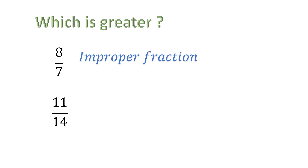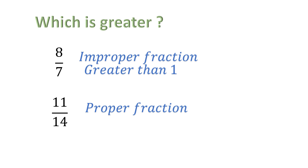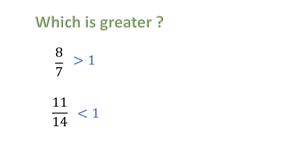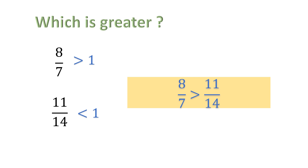Notice that 8/7 is an improper fraction because the numerator is greater than the denominator. As shown previously, improper fractions are always greater than 1 — we needed more than one block to represent it. Meanwhile, 11/14 is a proper fraction, which is always less than 1. So by simply identifying one fraction as improper and the other as proper, you can immediately conclude that the improper fraction is greater — no LCM calculation needed.